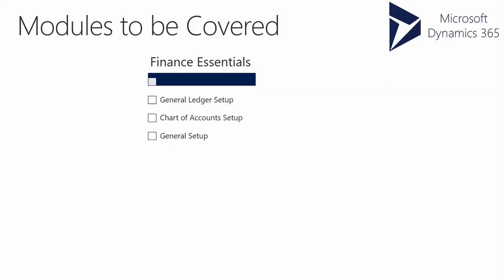Followed by the journal setup — creating journal names, periodic journals, daily journals, intercompany journals, and the different types of journals available — along with GL daily procedures, which covers how to start working with ledger entries and creating new journals based on the journal names created previously.